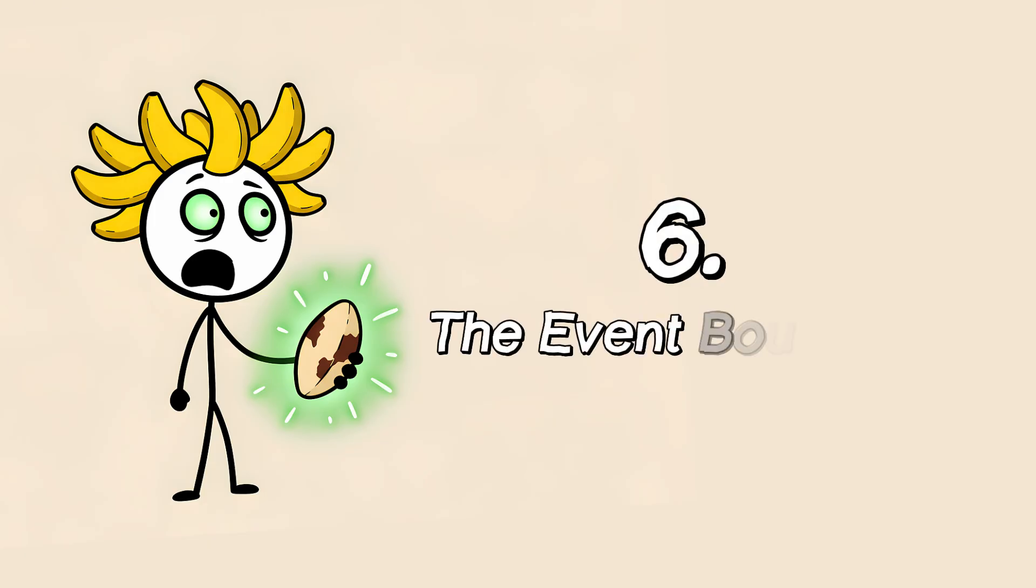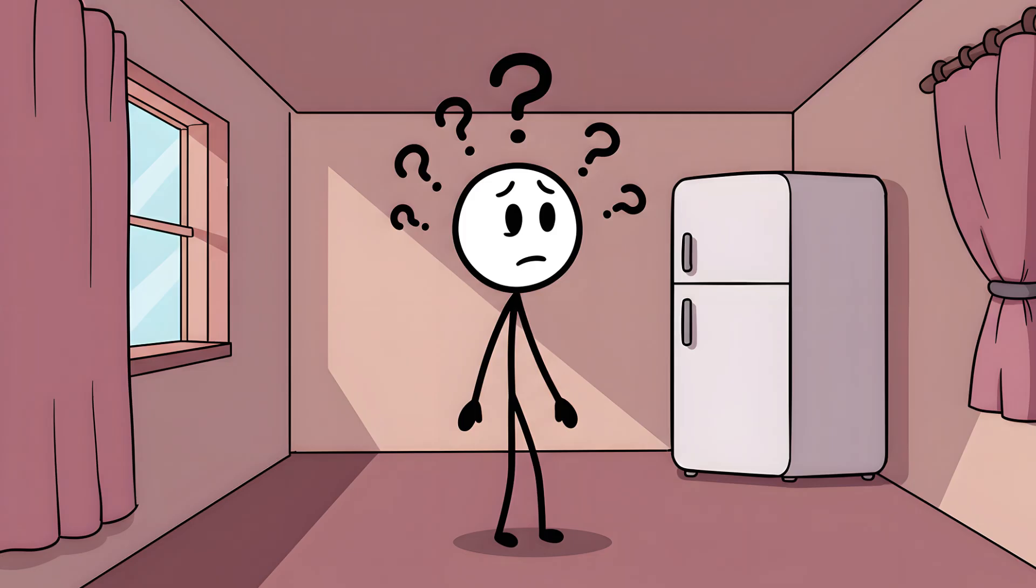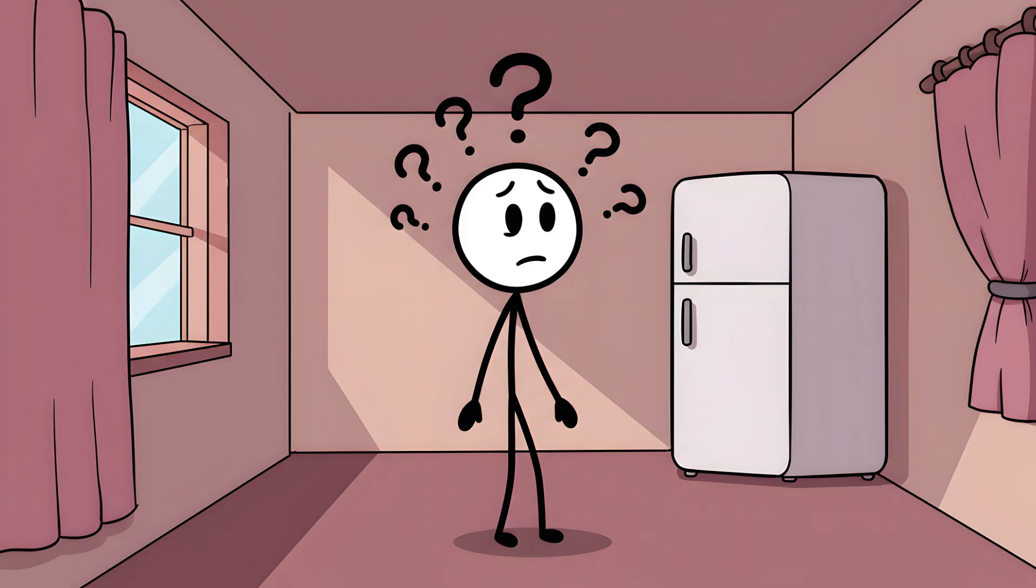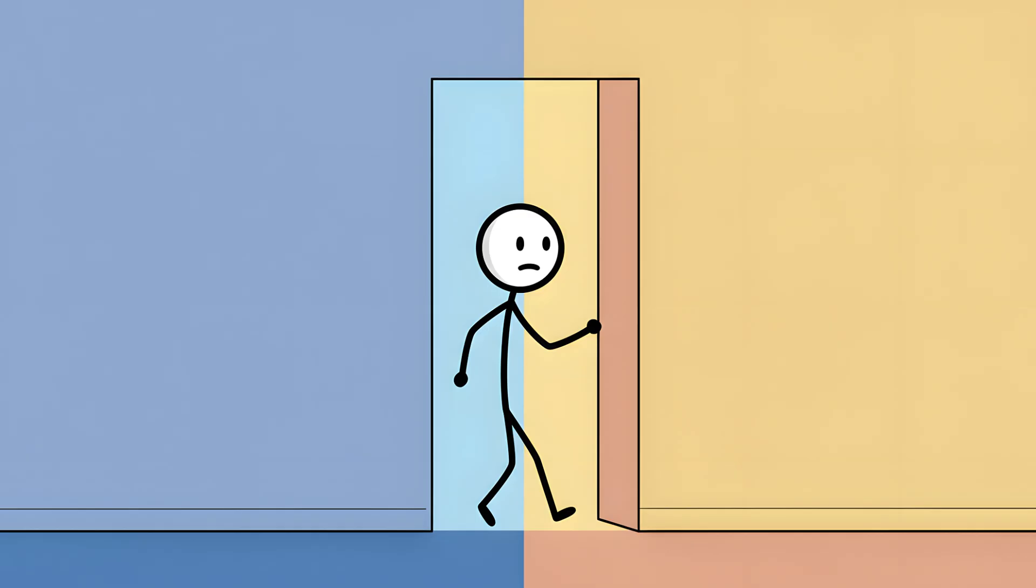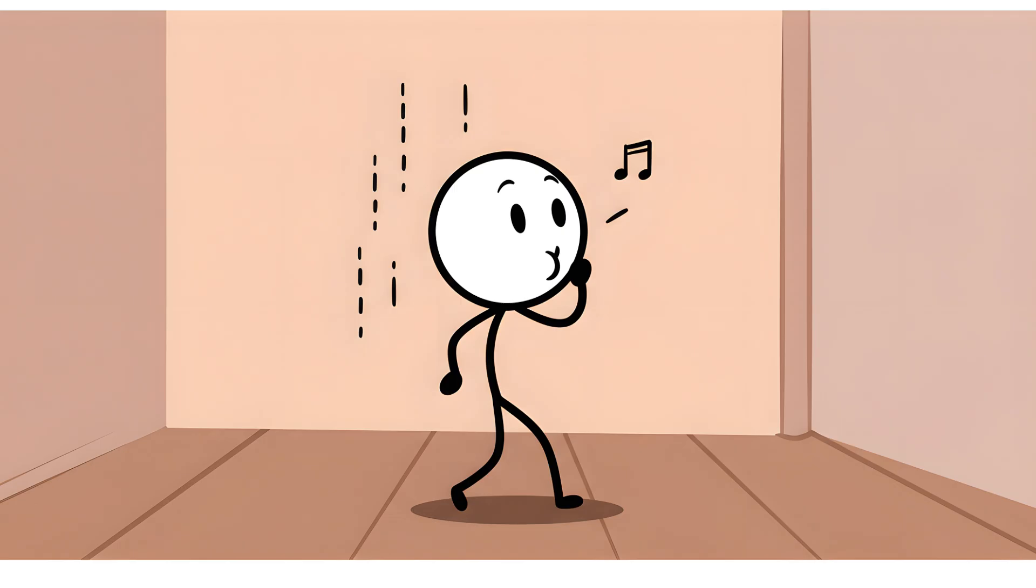Number 6. The event boundary. Here's where it gets weirder. It's not just doorways. The doorway effect is a cute name, but the real culprit is something scientists call an event boundary. This is any moment in time your brain perceives as the end of one event and the beginning of another. It's a mental punctuation mark. A doorway is the most obvious kind, a literal, physical transition. But you experience event boundaries all the time without realizing it.